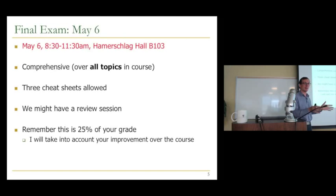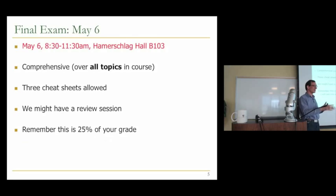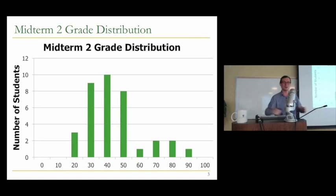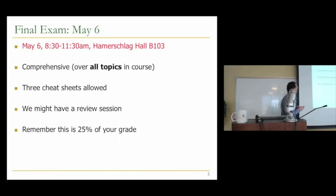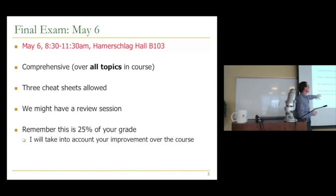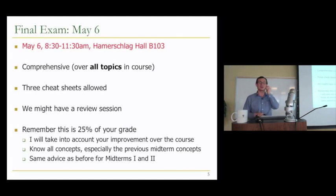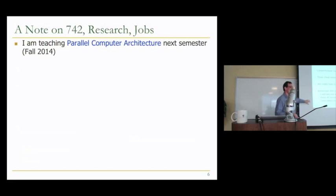Some of you have asked what happens if people drop — I do include them in the curve. There have been people who dropped the course, but they're not necessarily in this distribution; otherwise you would have zeros. I do include them in the curve, so it's everyone who started the course. I will also take into account your improvement. If you got zeros on the first two exams and aced the final, that's a big improvement and we will take that into account.